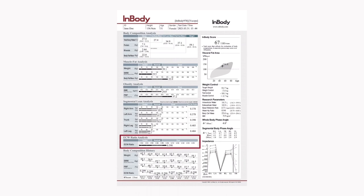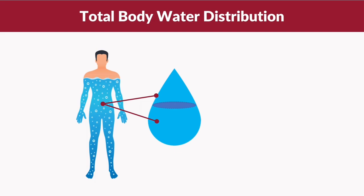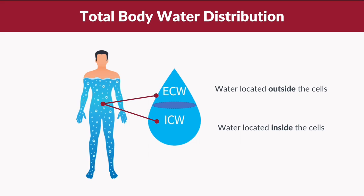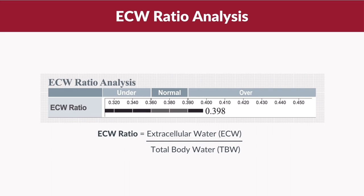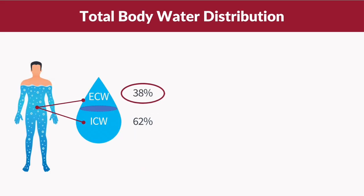Next, let's talk about the ECW ratio analysis. The total body water is actually made up of two compartments: the extracellular water and intracellular water. Extracellular water is the water located outside the cells, such as the blood plasma and interstitial fluid, while intracellular water is the water located inside the cells, such as in the muscle cells. The water distribution in a healthy individual is usually 62 percent intracellular water and 38 percent extracellular water. In the InBody 970 result sheet, the water balance distribution is represented as the ECW ratio, which is the ratio of extracellular water to total body water.